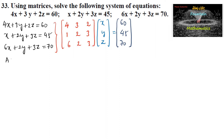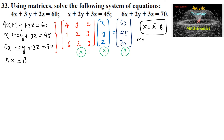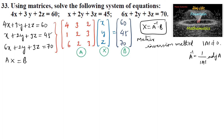We can write this in the form AX equals B, where A is the coefficient matrix, X is the variable matrix, and B is the constant matrix. We know that X equals A inverse times B. This is the matrix inversion method, which is applicable only when A inverse exists, that is, the determinant of A is not equal to 0, since A inverse equals 1 over det(A) times the adjoint of A.